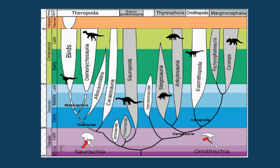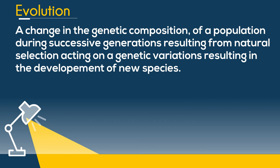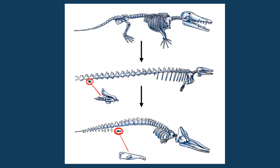Next, we have evolution: a change in the genetic composition of a population during successive generations, resulting from natural selection acting on genetic variation, resulting in the development of new species. And here's a picture — this is actually a well and the evolution of the well.